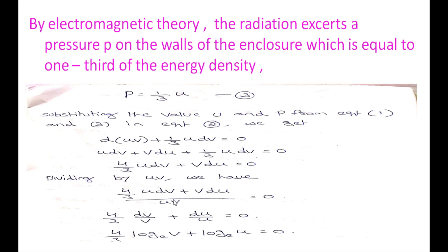From electromagnetic theory, the radiation exerts a pressure on the walls of the enclosure which is equal to one-third of the energy density. The pressure acts on the walls due to the radiation inside. Therefore P is equal to u by 3.